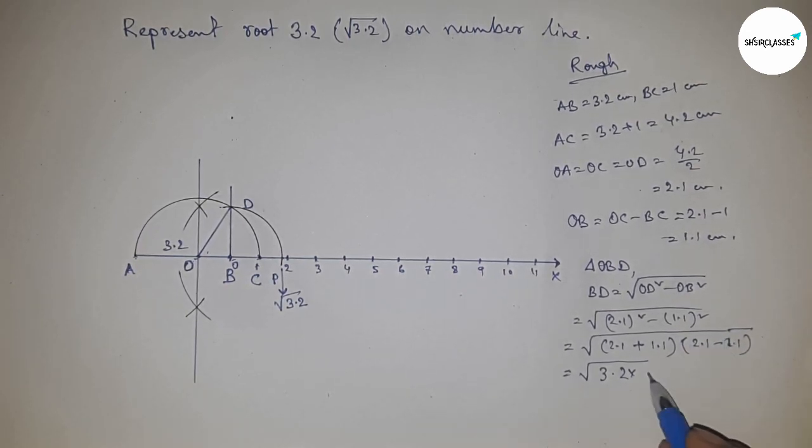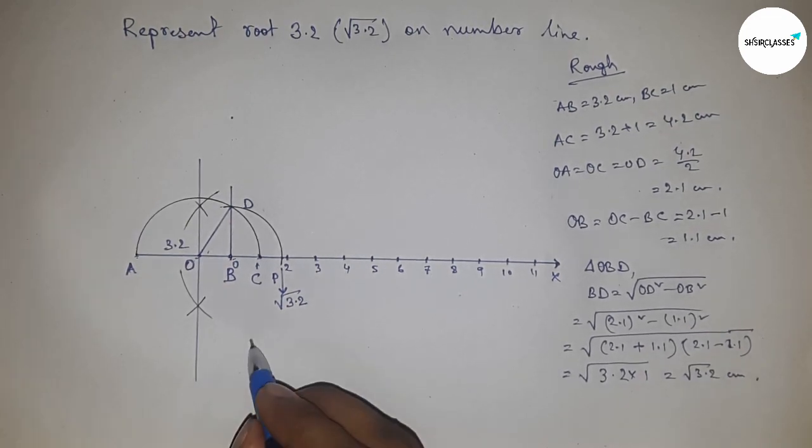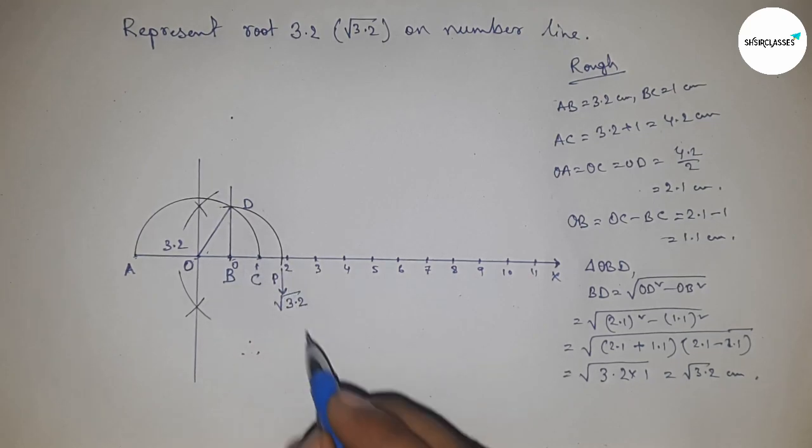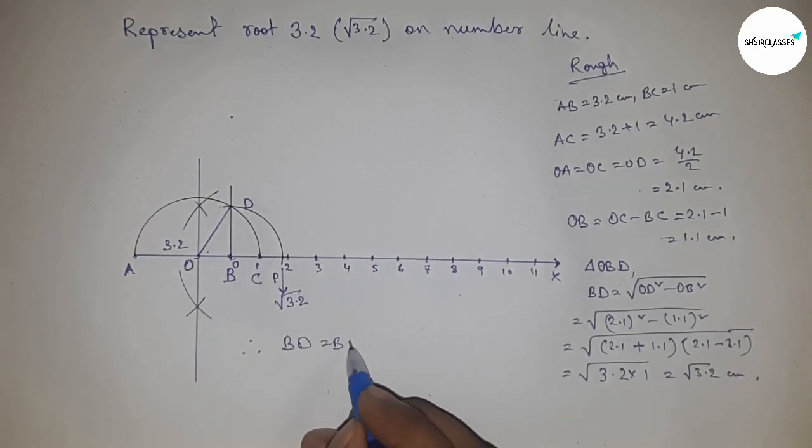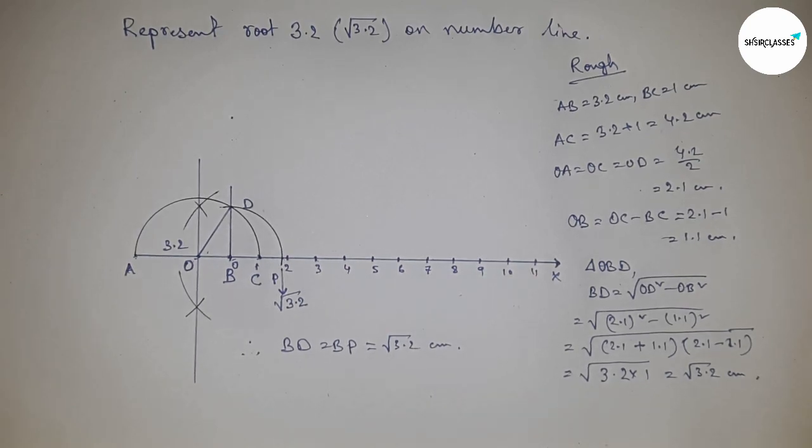Therefore, the distances BD and BP are equal: BD equals BP equals root 3.2 centimeters. That's all, thanks for watching! Please subscribe, like, and comment on my video.